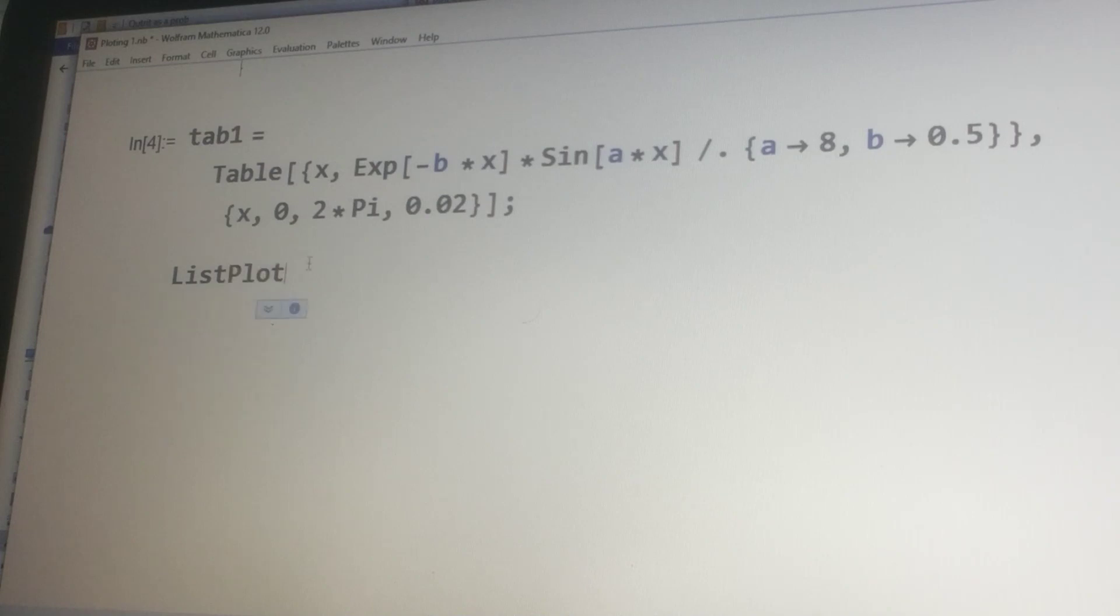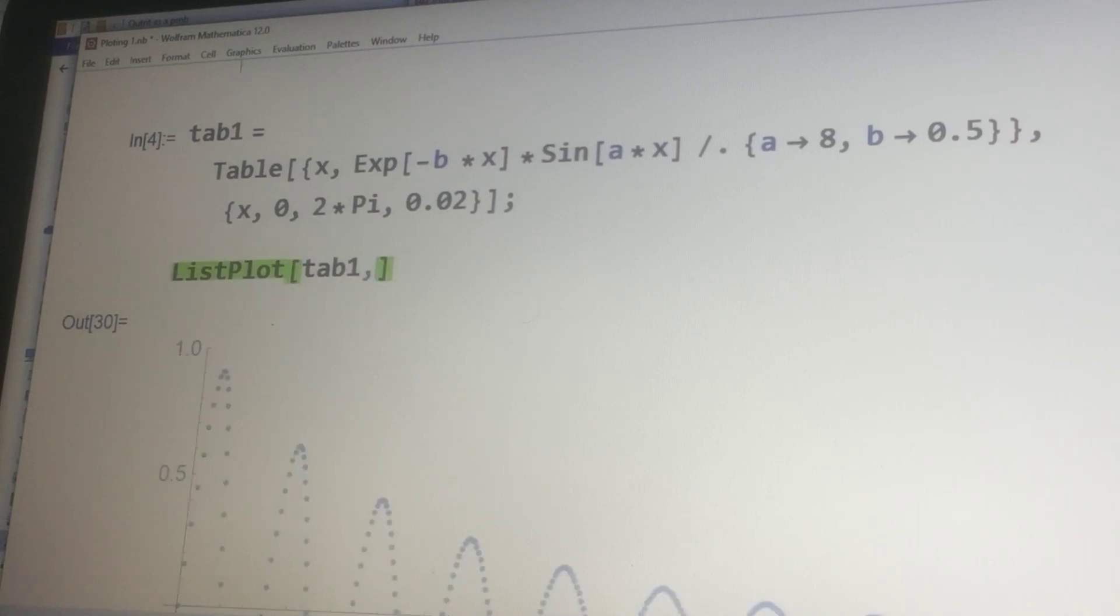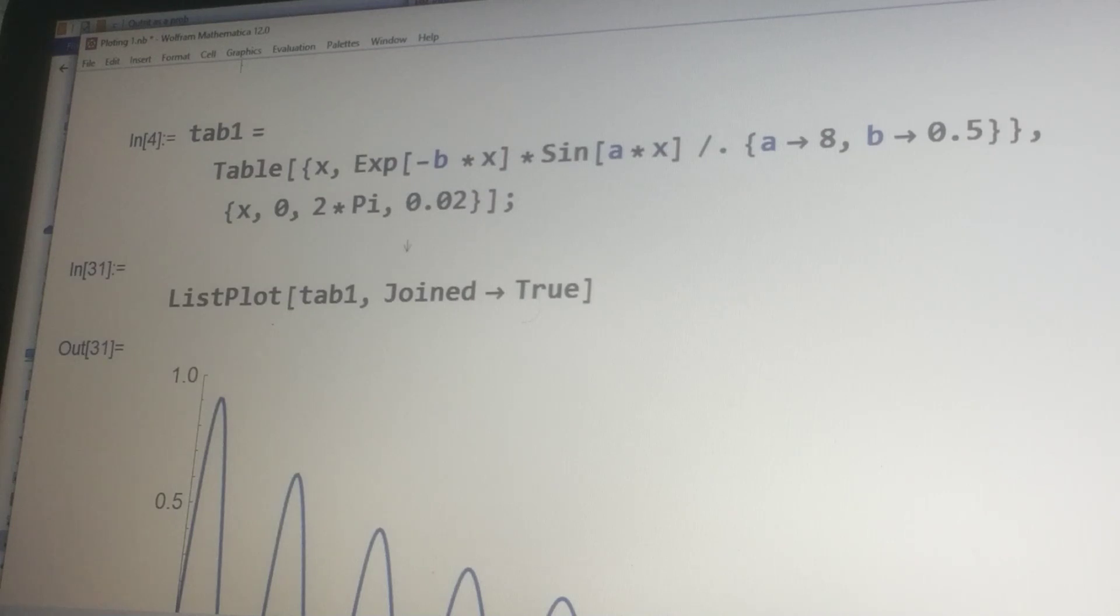ListPlot here, this first command. And I would like to write table one over here. If I do that, it will give me a plot in terms of dotted. And then in order to join this plot, I have to add the Joined command here. If now I plot it like this, it will be a curve.